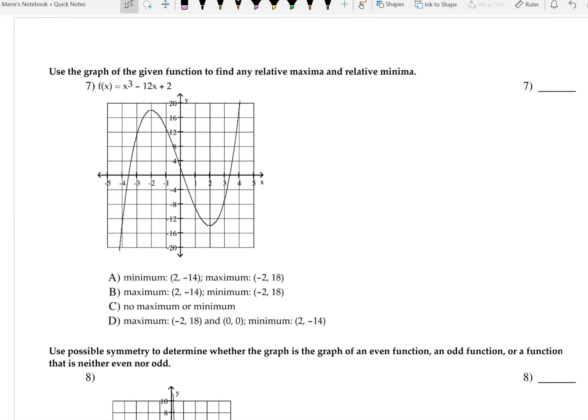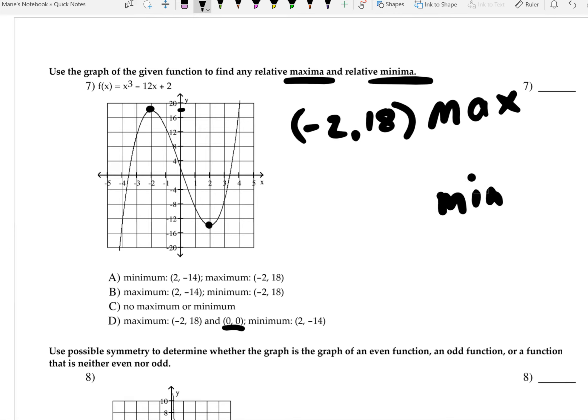For number seven, they're asking you for the relative maxima and minima. That is this point and this point. So you can immediately eliminate this. This is just too tricky. You can see that the maximum is at the point, and we're going to estimate that to be 18, so we're looking at negative two comma 18 for the max. And for the minimum, we're looking at two, 14, two negative 14, which is down here. And so answer choice in this case would be A for number seven.